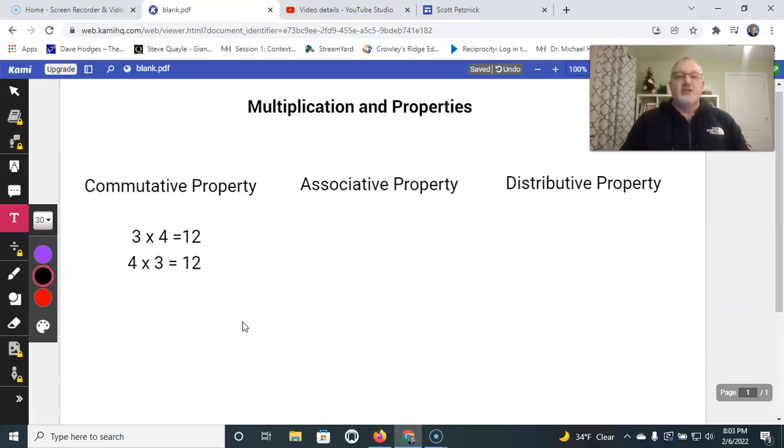So we use this commutative property all the time because sometimes, like if we're trying to figure out a math fact, we might want to work with the four or the three. It just makes it easier. It doesn't matter which one. As long as I know one of them, I know both of them, if that makes sense.